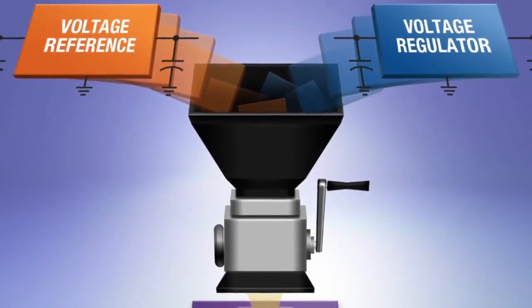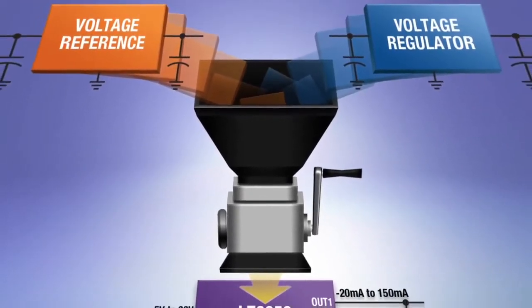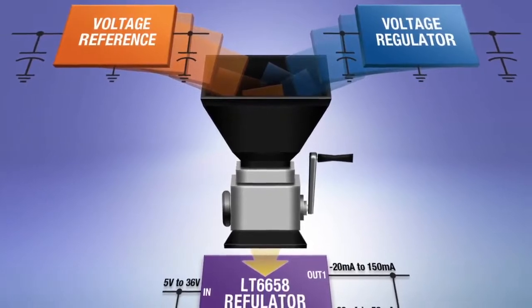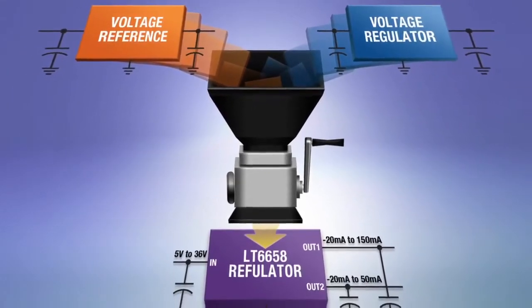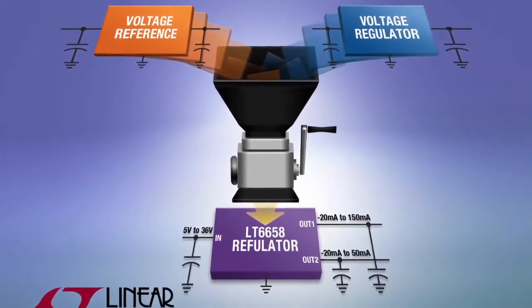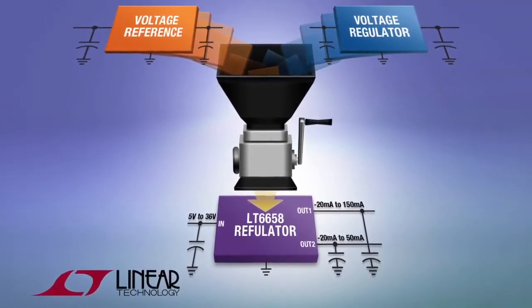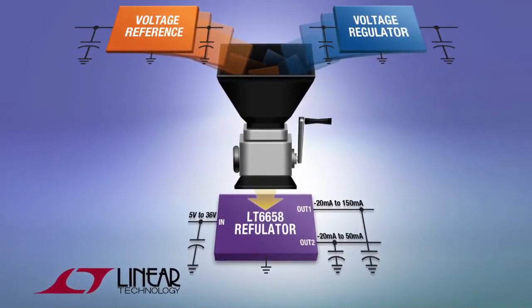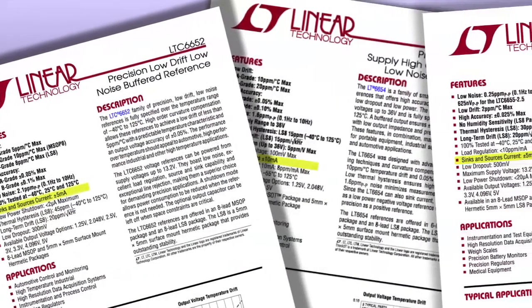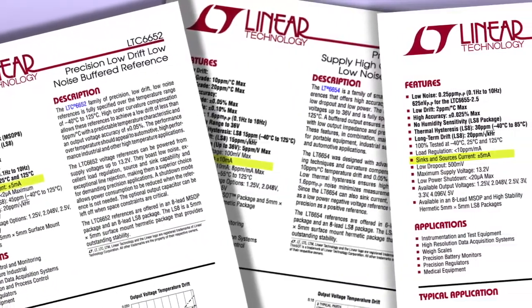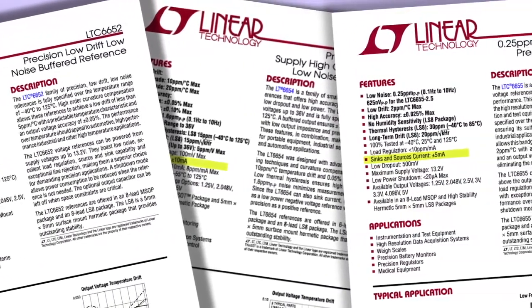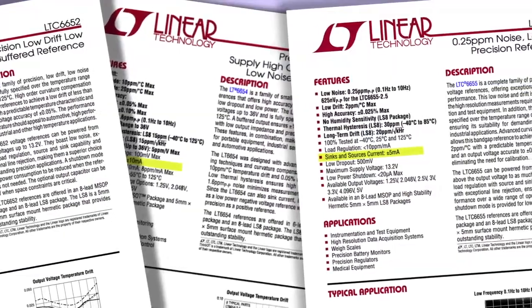Band gap voltage references have long been used in integrated circuits. Two common implementations include voltage regulators, often referred to as LDOs due to their low dropout operation, and voltage references. Each function uses the band gap circuit differently, and the design is optimized for that exact function.